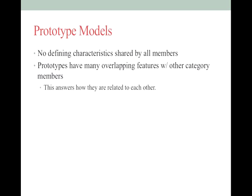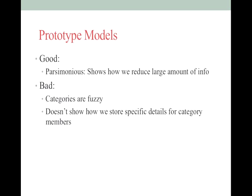What else is good about the prototype model? There are no defining characteristics — it's different from feature comparison — and it's more flexible. Prototypes can have many overlapping features, which really answers how categories are related to each other and how members are related within a category, solving the relationship problem that feature comparison theory had. However, the downside is that categories are very fuzzy, which can cause problems when you're trying to figure out what people are going to do — it's a little unpredictable.